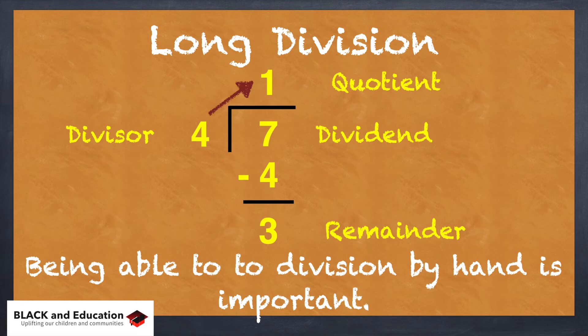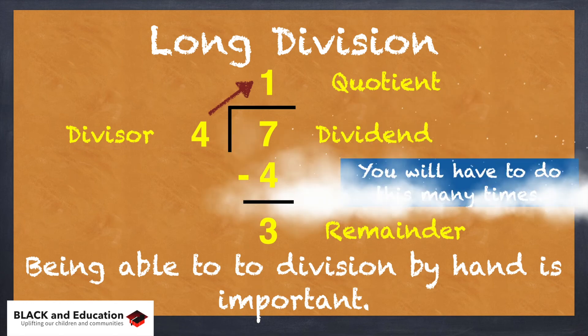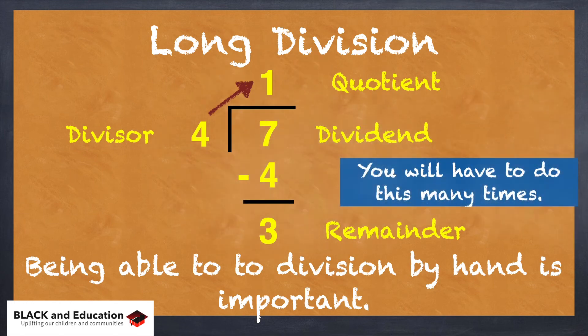1 becomes the quotient. So the answer is 1 with a remainder of 3. Being able to divide by hand is very important in math. In this case, 4 goes into 7 one time with a remainder of 3.